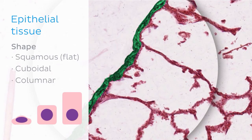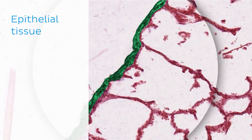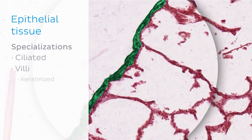Here you can see cartoon depictions of these cells: the fried egg-like squamous cell on the left, the cuboidal cell in the middle, and the columnar cell on the right. Epithelial tissue can also be categorised according to specialisations that the epithelial cells may possess — for example, they may be ciliated, have villi, or be keratinised.